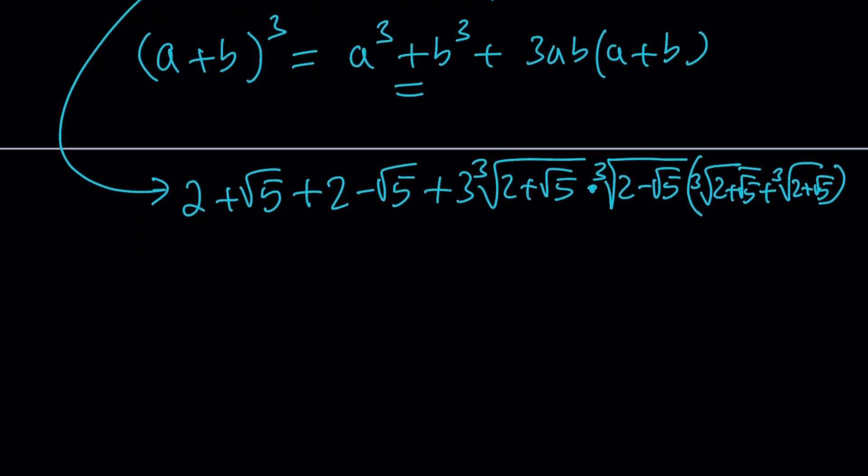Root 5 cancels out. 2 plus 2 is equal to 4. So x cubed is equal to, because this was equal to x cubed, remember? 2 plus 2, 4. And then this times this is 4 minus 5 under the radical. But that's just the cube root of negative 1, which is negative 1. And multiply by 3, you get a negative 3. Multiply by this, which is x. Awesome.